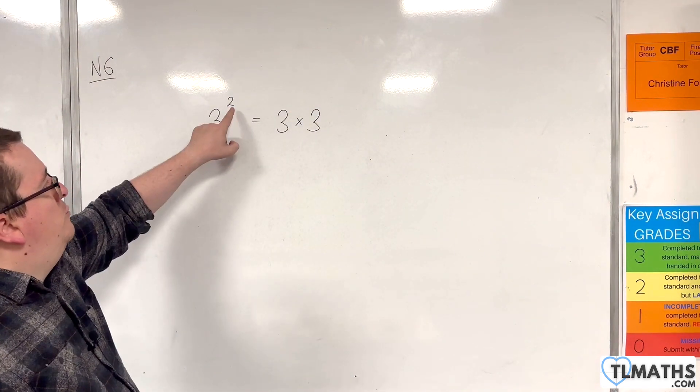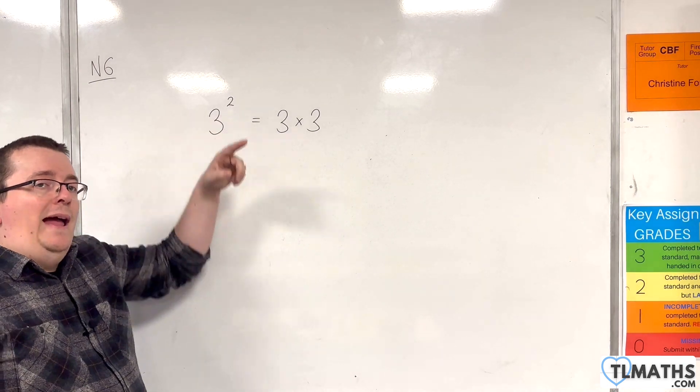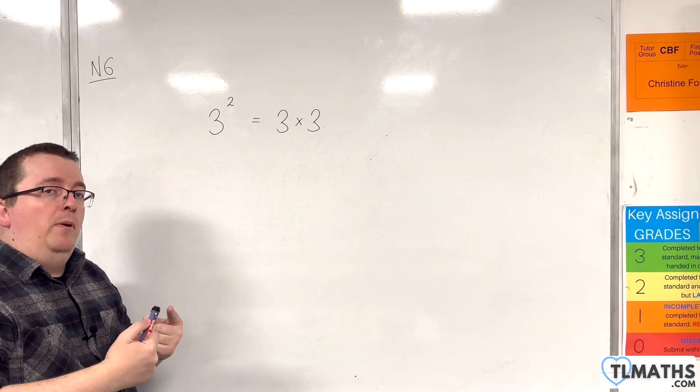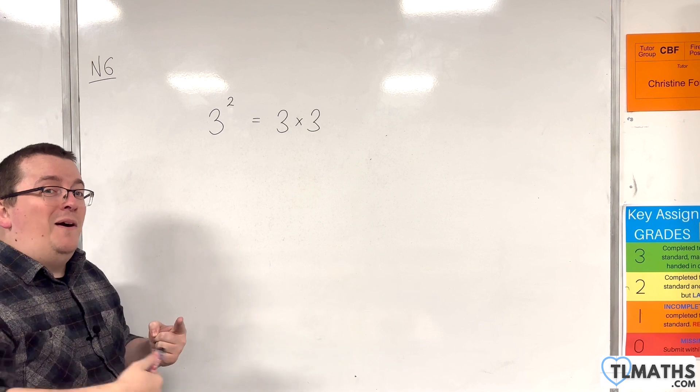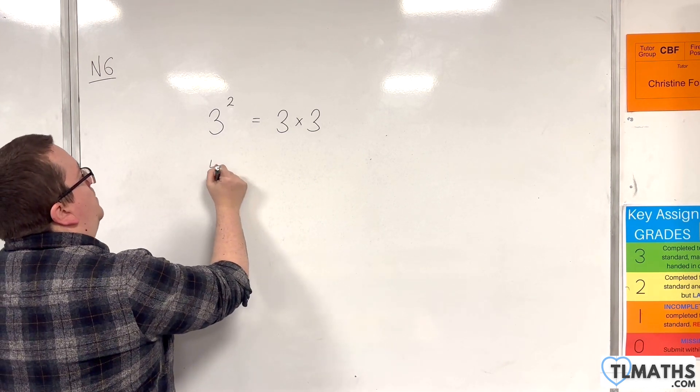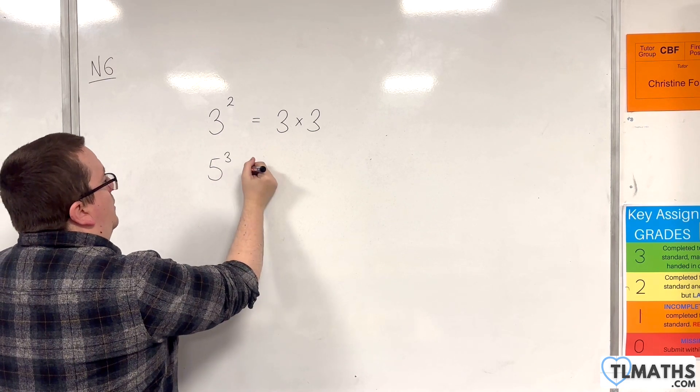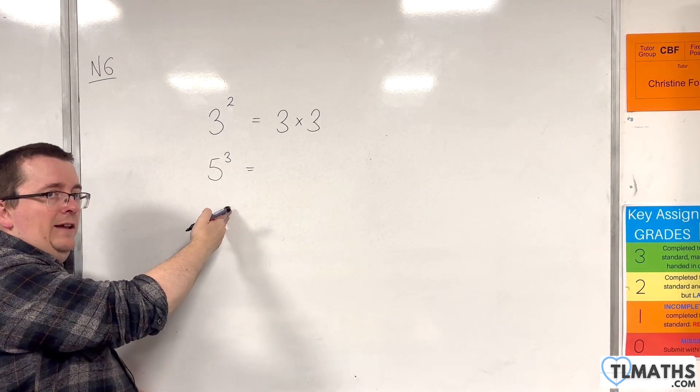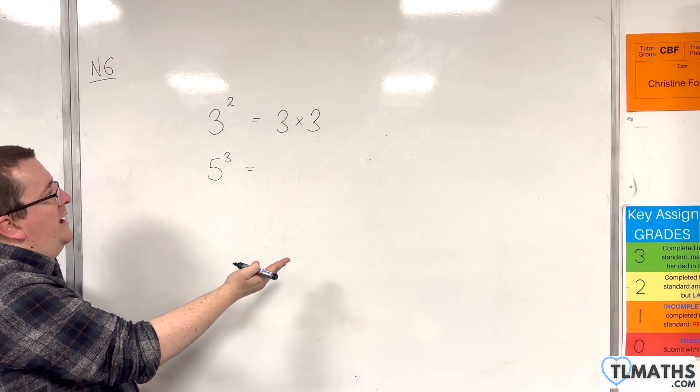Essentially, what this number is doing is it's telling you how many times to multiply the number by itself. So another example would be something like 5 cubed. Now, obviously, this isn't a squared, so this is beyond the video that we're looking at at the moment.